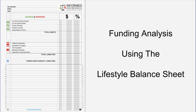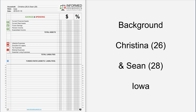We're doing a funding analysis using a lifestyle balance sheet. This one-page template to the left is what we'll fill in with data from our Informed Household dashboard report and then analyze. Let me introduce our fictitious couple, Christine and Shawn — currently in their mid-20s, living in Iowa, both employed, wanting to retire in their mid-to-late 50s. They have a very active bucket list, anticipate living into their mid-to-late 90s, no kids, and plan to stay in the Midwest.